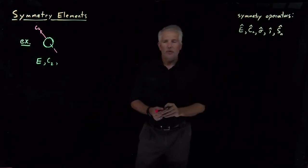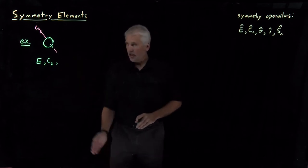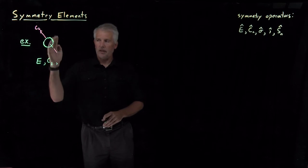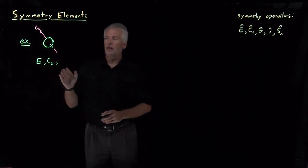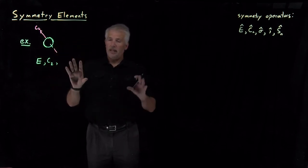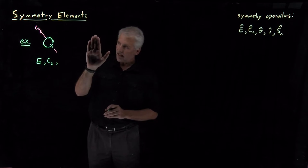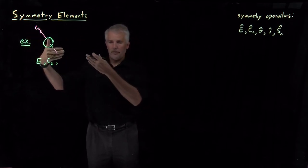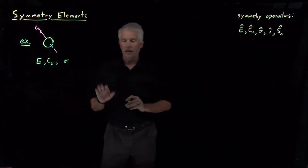Are there any reflection planes? If I make a plane bisecting the letter vertically, it's not a symmetry element — the tail flips through the mirror to the other side. Likewise, the horizontal planes are no good. However, there is a plane in the plane of the board. If I imagine this Q as a three-dimensional object and bisect it in the plane of this glass board, then if I flip the letter through that mirror, it remains unchanged. So there is a sigma plane in the plane of the board.